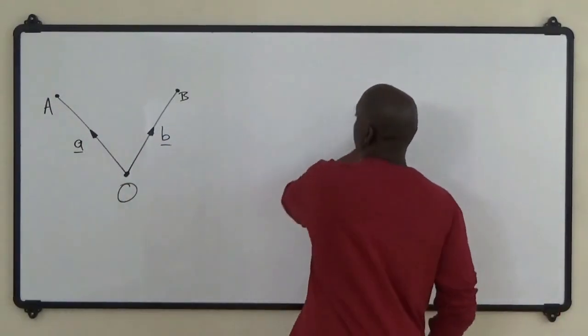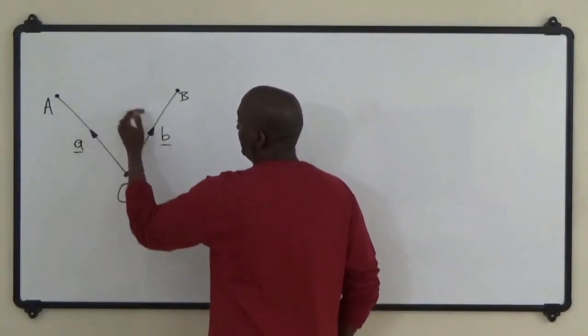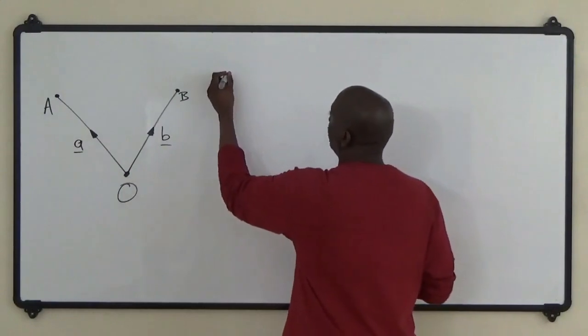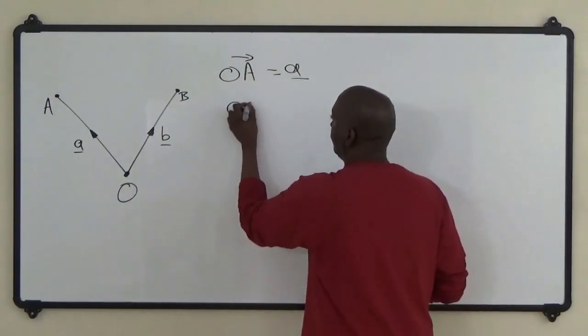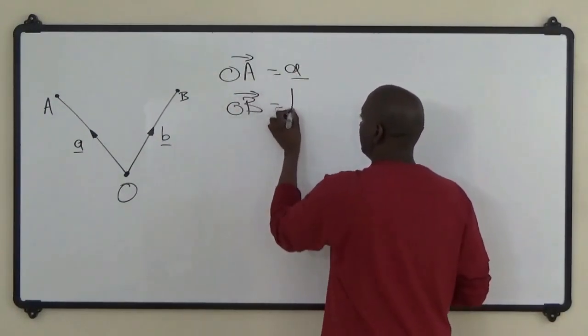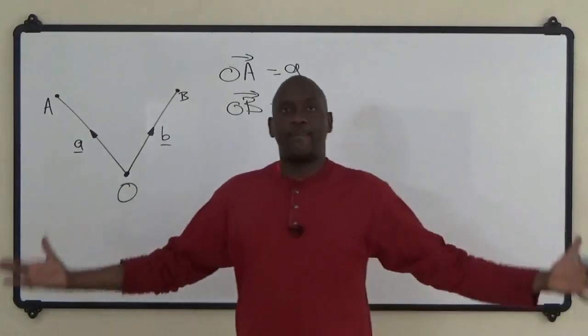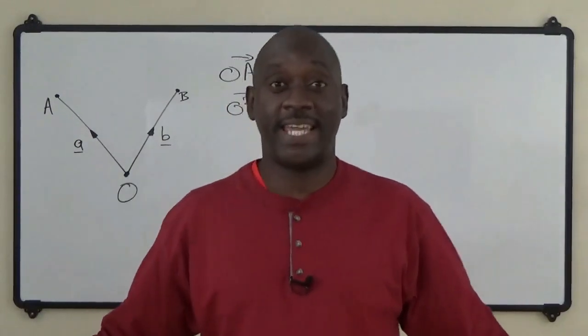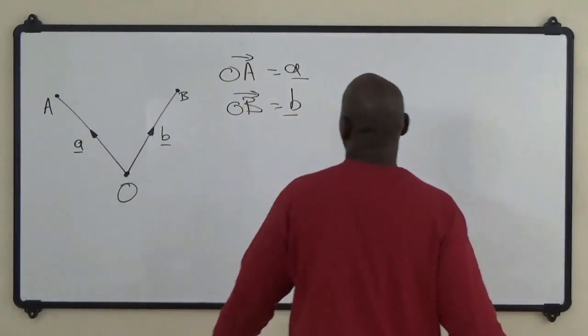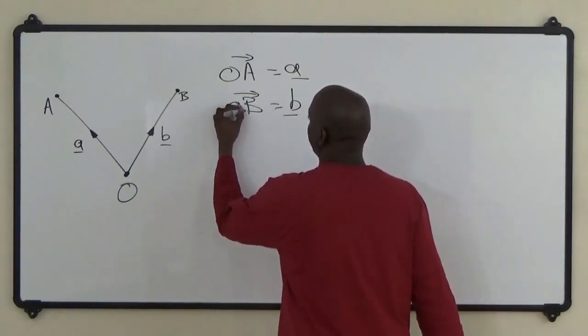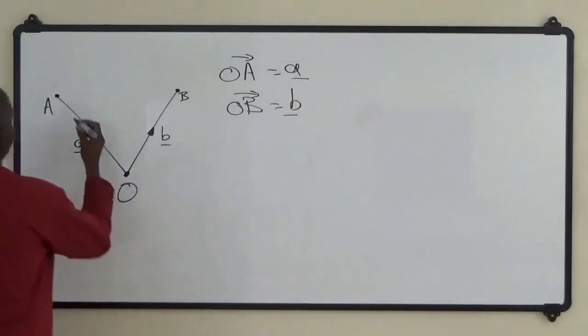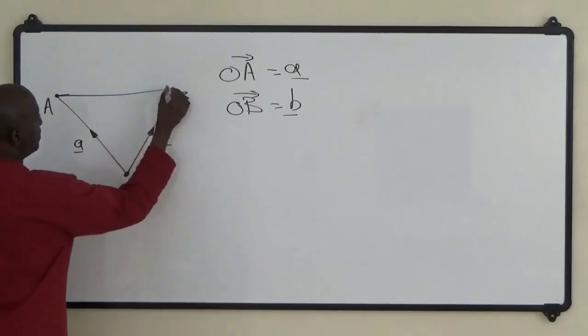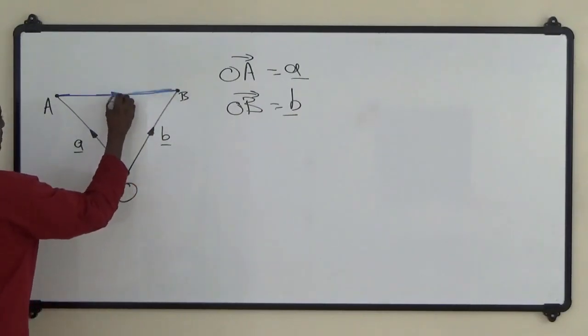Generally speaking, in a lot of cases they will ask you to find AB. So in other words, OA is equal to a, and OB is equal to b. We want to find the vector AB. Let me change the color. The vector AB - we start from A and move across to B. That's the vector we're trying to find.